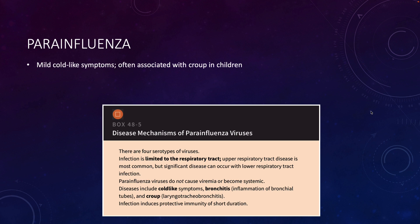We generally don't see parainfluenza go systemic or get into the bloodstream, but it can cause cold-like symptoms, bronchitis, and croup.